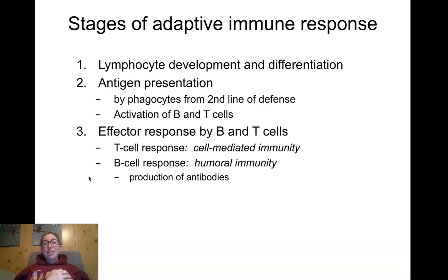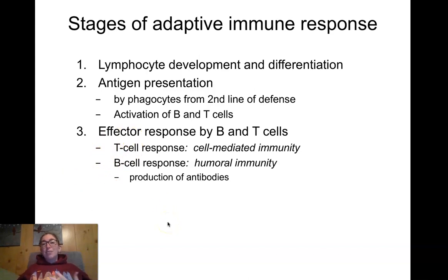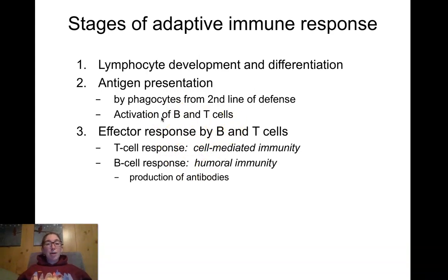During antigen presentation, innate immune cells that gobbled up bacteria present antigen to these naive cells and activate them. Then, once they're activated, they can go do their thing — that's step three, their effector functions. B cells, when activated, make antibodies. T cells have a bunch of different types with different roles, but we call all of the T cell response cell-mediated immunity.